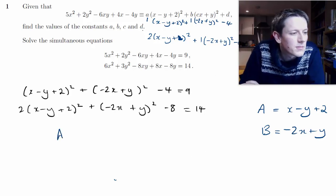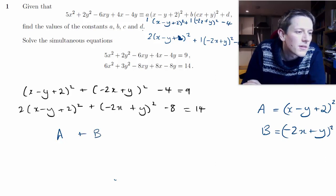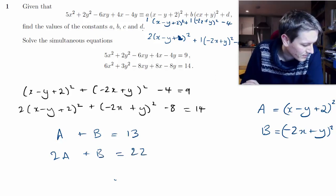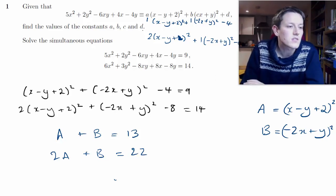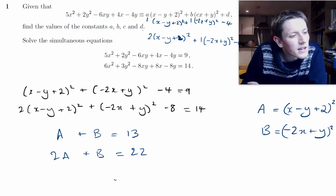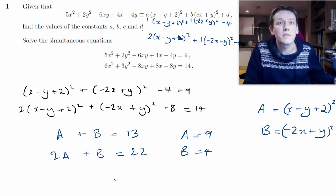The first equation becomes A + B = 9 + 4 = 13, and the second becomes 2A + B = 14 + 8 = 22. Subtracting the first from the second gives immediately A = 9, and substituting back gives B = 4.